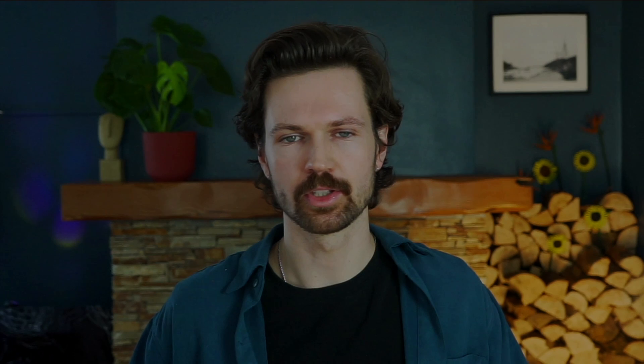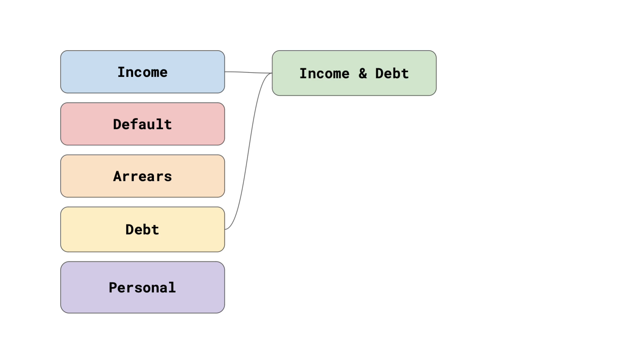The question is, how can we create these groups of features? We could do it manually using domain knowledge, or there may already be an obvious grouping. For our car loan example, we could create six groups: five main data sources and one combination of income and debt.